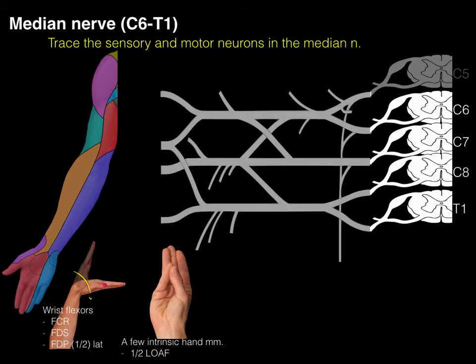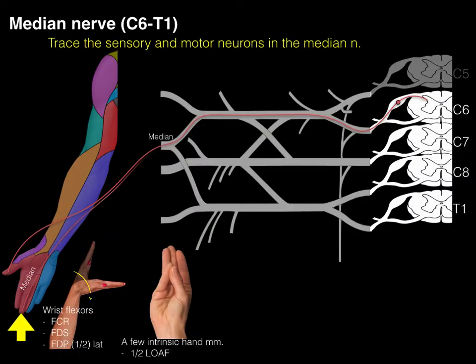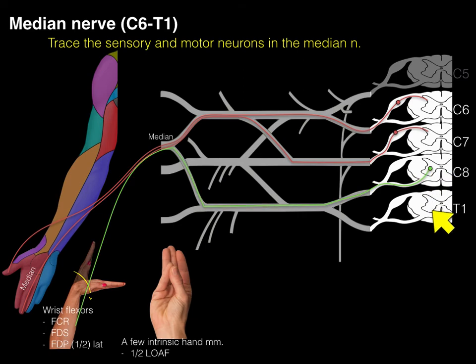Tracing sensory and motor neurons in the median nerve: sensory neurons from the thumb go to C6; from the middle finger (swear finger) to C7; motor neurons from C8 go to the wrist flexors; and T1 goes to intrinsic hand muscles, specifically the thenar muscles. The median nerve has four different spinal cord segments associated with it — C6 and C7 are primarily sensory, and C8 and T1 are primarily motor.